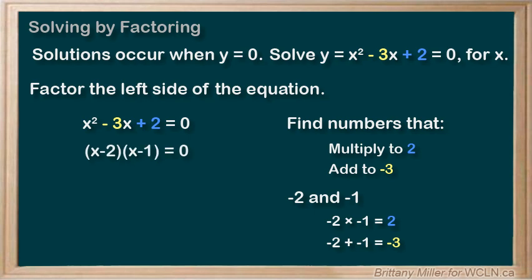That means that we need to find values of x that will make (x-2)(x-1) = 0 true. In order for that to happen, x-2 needs to equal 0 or x-1 needs to equal 0. So x = 2 and x = 1 are both our solutions.